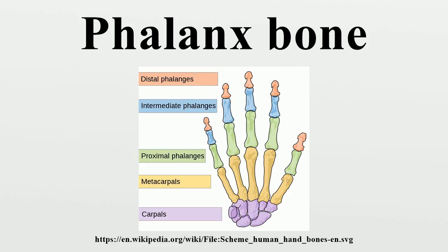In the foot, the proximal phalanges have a body that is compressed from side to side, convex above, and concave below. The base is concave, and the head presents a trochlear surface for articulation with the second phalanx. The middle phalanges are remarkably small and short, but rather broader than the proximal. The distal phalanges, as compared with the distal phalanges of the finger, are smaller and are flattened from above downward. Each presents a broad base for articulation with the corresponding bone of the second row, and an expanded distal extremity for the support of the nail and end of the toe.